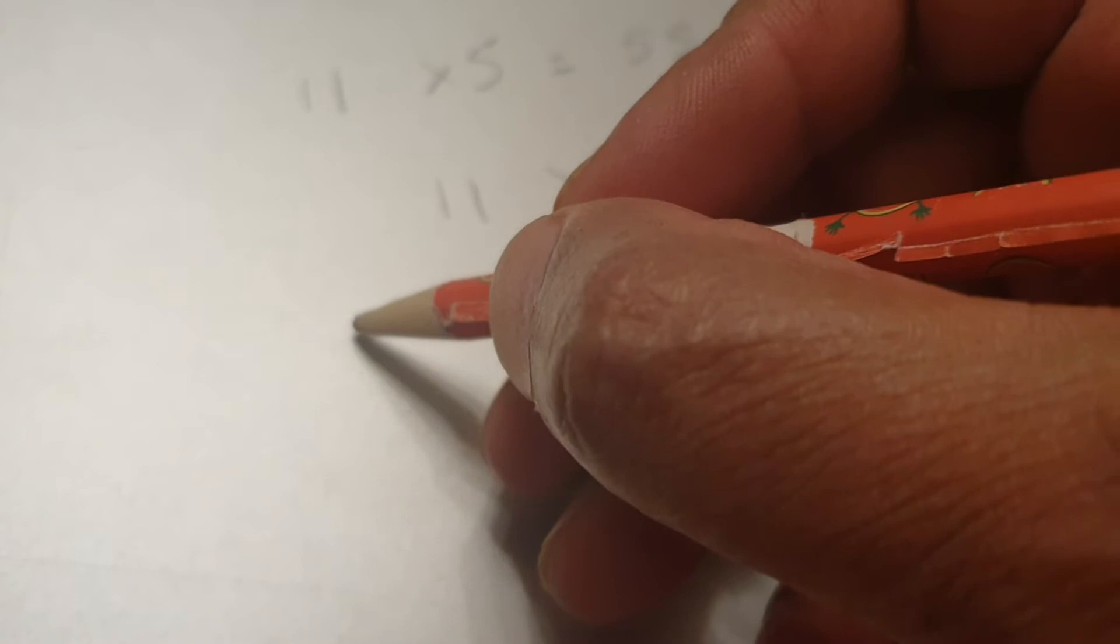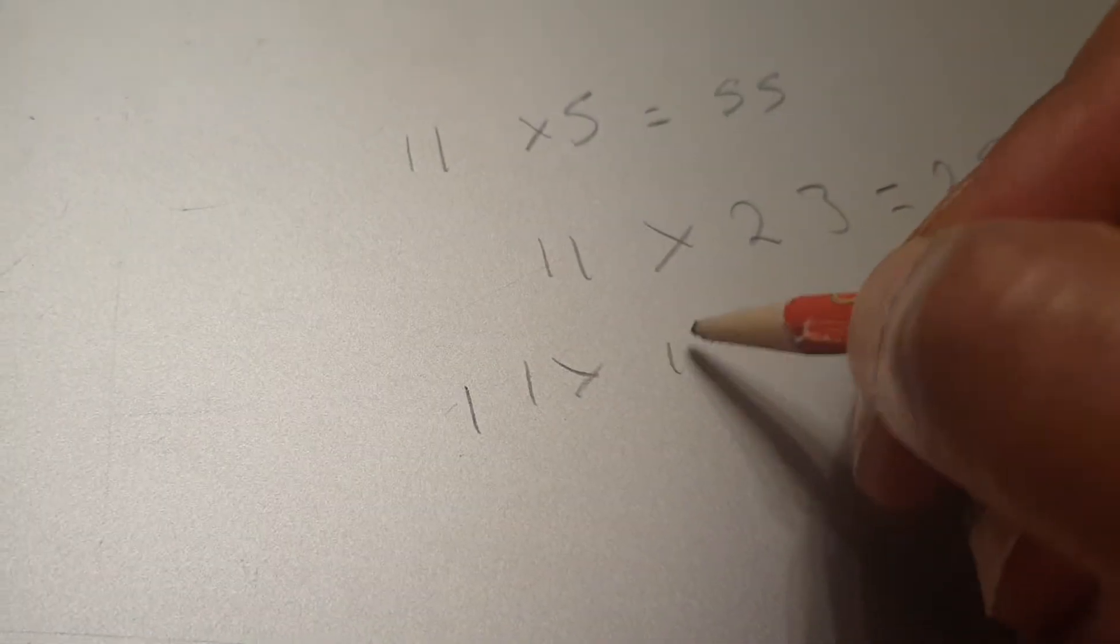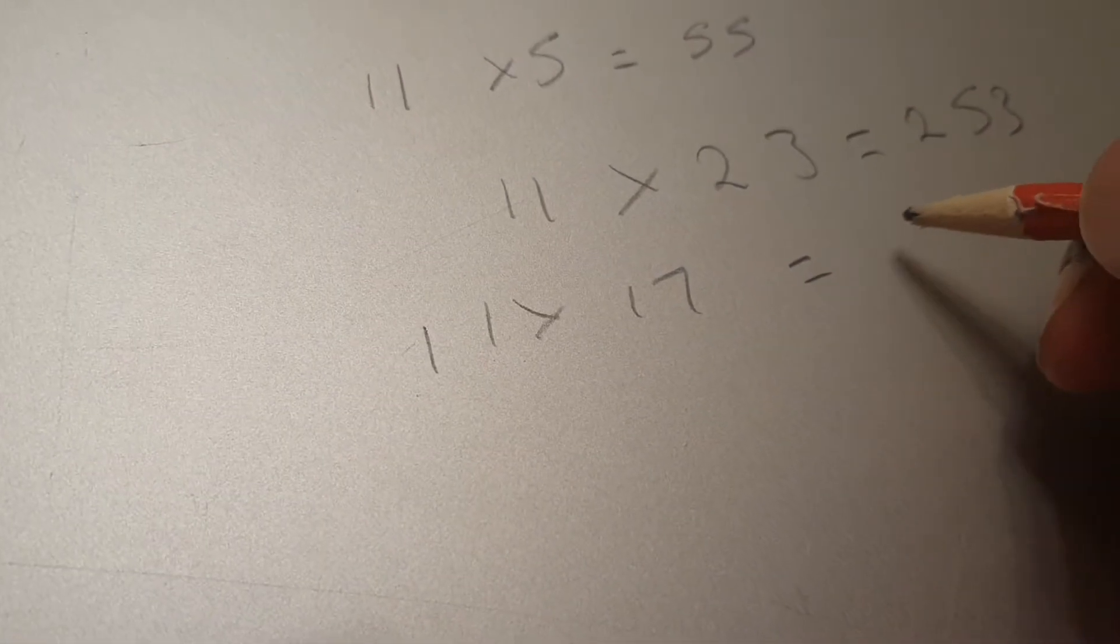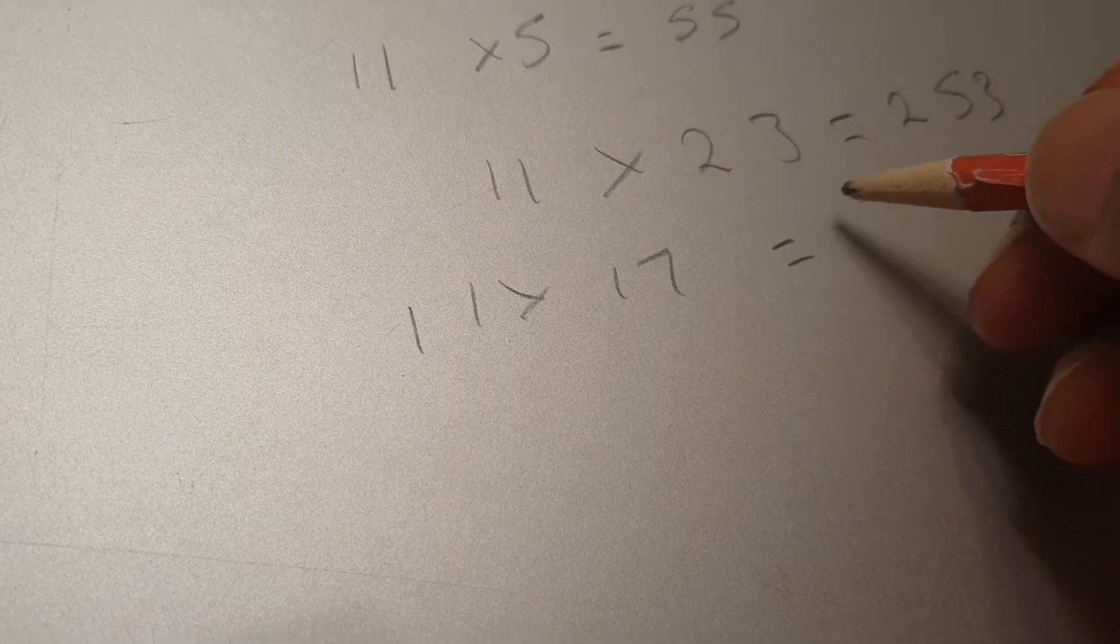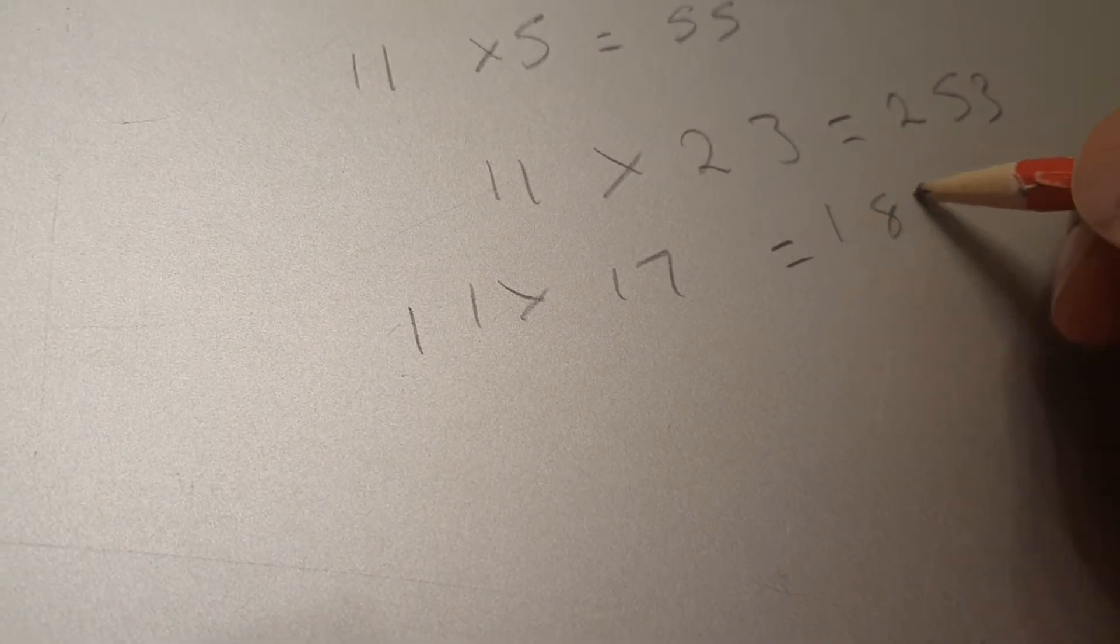Let's do another one. 11 times 17 equals... 187.